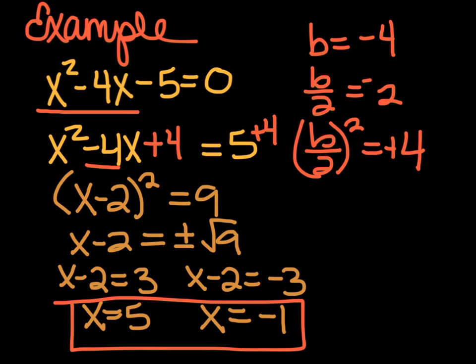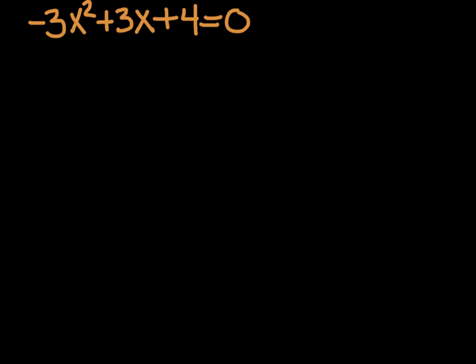That's how you solve by completing the square. Now here we have negative 3x squared plus 3x plus 4 equals 0. This one does not factor. So other than the quadratic formula, you don't really have any way to solve it except completing the square. Once you practice this a few times, you might find this is your method of choice — I like it better than the quadratic formula.